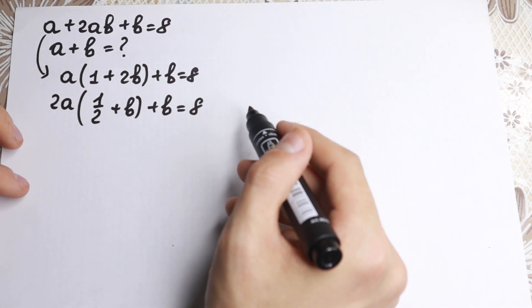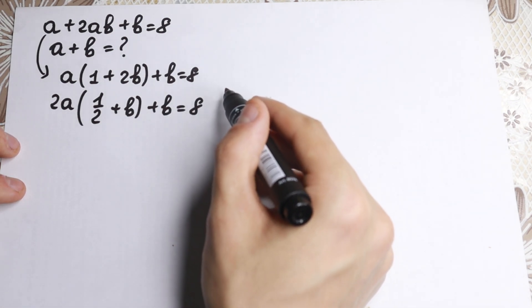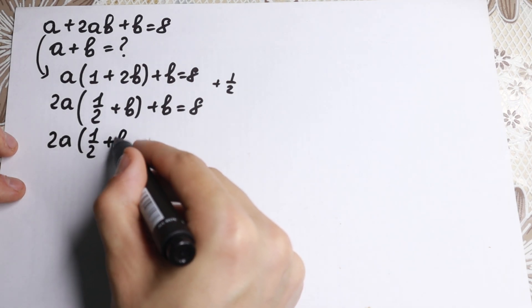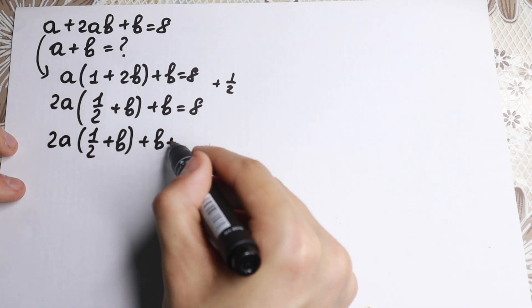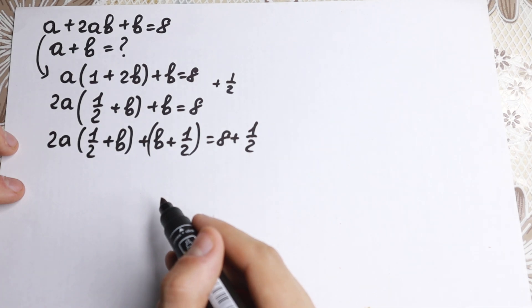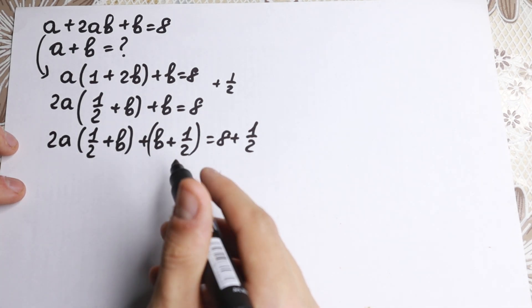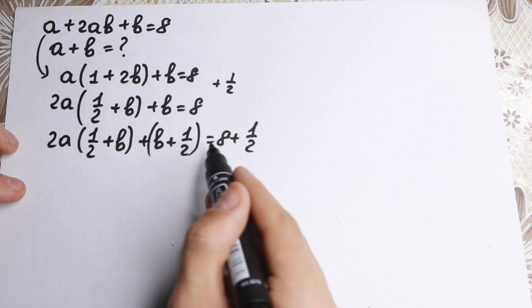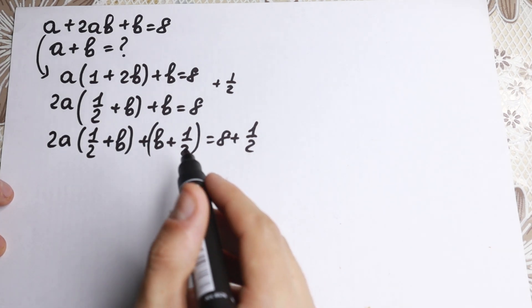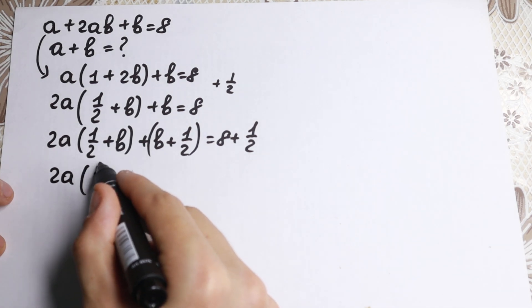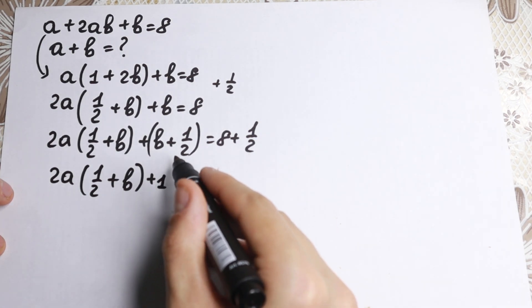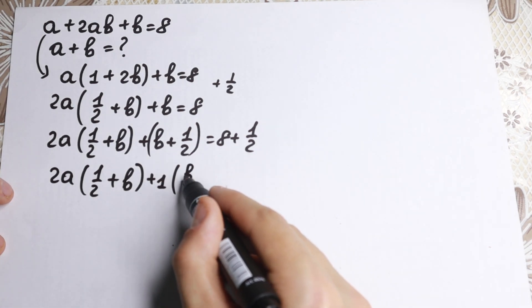Now I want to show you a really good trick here. Take a look closely — I want to add 1/2 to both sides. If we add 1/2 to the left-hand side we will have 2a times (1/2 plus b) plus (b plus 1/2) in parentheses equal to 8 plus 1/2. This is the main trick — I just add 1/2 to both sides so that nothing changes. We need to add it to both sides. So right here we have 2a(1/2 plus b) plus 1 times (b plus 1/2) — b plus 1/2 doesn't matter, it's the same.